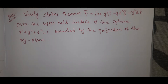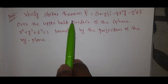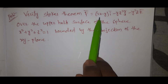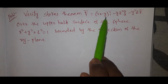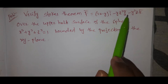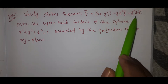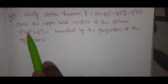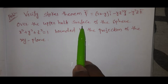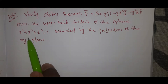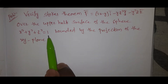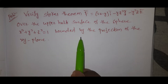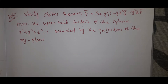Hi viewers, welcome to Rajesh Nekaru. Today our topic is Stokes theorem problem. Verify Stokes theorem: F̄ = (2x - y)ī - yz²j̄ - y²zk̄ over the upper half surface of the sphere x² + y² + z² = 1, bounded by the projection on the xy plane.